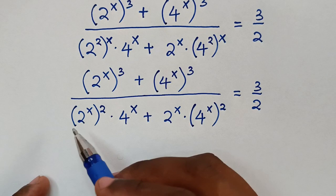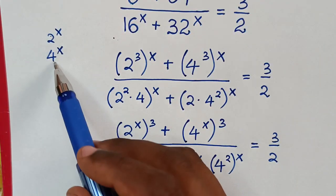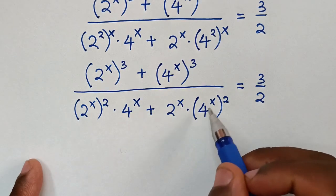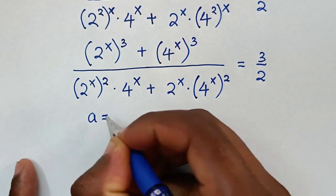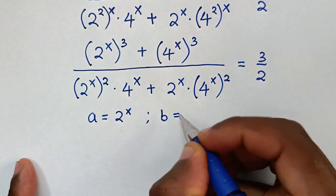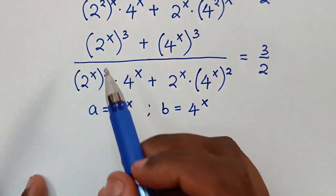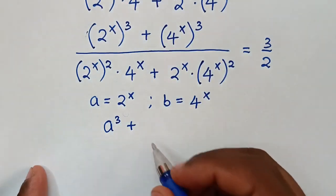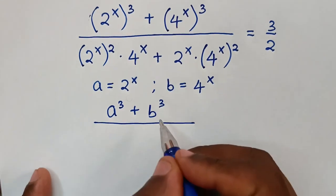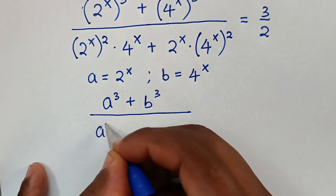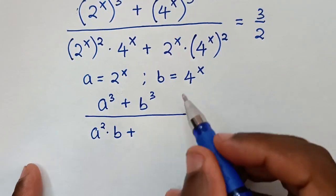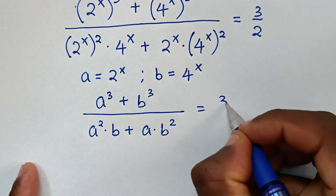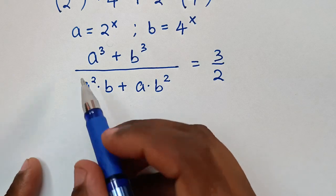In the next step, we express everything in terms of 2^x and 4^x. We let a = 2^x and b = 4^x. So the expression becomes (a^3 + b^3) / (a^2·b + a·b^2) = 3/2.